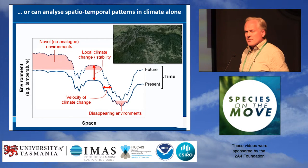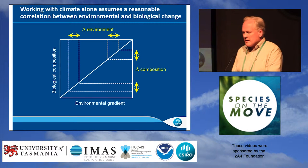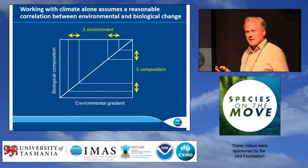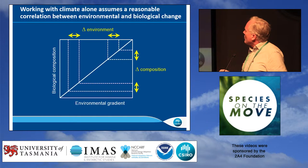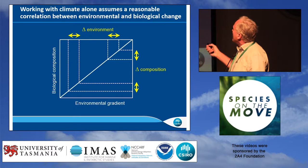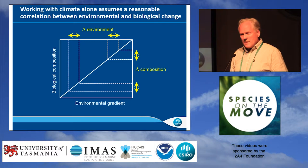Now, this is all very well, but there are some assumptions underpinning this approach. Probably the biggest assumption of all is that a reasonable correlation exists between changes in environment and changes in the biota. One way of thinking about this is that if we have an environmental gradient, and we can also imagine a gradient of biological composition, then what's being assumed is that a fixed amount of change in environment will result in roughly the same amount of biological change, or change in community composition, no matter where you are in the world.